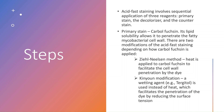In acid-fast staining there are three steps applied in order: the primary stain, the decolorizer, and the counter stain. The primary stain used is carbolfuchsin. Carbolfuchsin is lipid-soluble, which is why we use it to stain bacteria with a lot of lipid in their cell wall — the lipid-soluble dye dissolves in the lipid and easily penetrates the fatty mycobacterial cell wall.